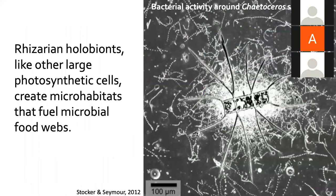In addition, this primary production can support very active microhabitats. Large photosynthetic cells, like this diatom on the right, but also photosymbiotic rhizarians, can attract a large amount of bacterial activity, which is highlighted in this image. All of this bacterial activity can then be transferred into the microbial food web.